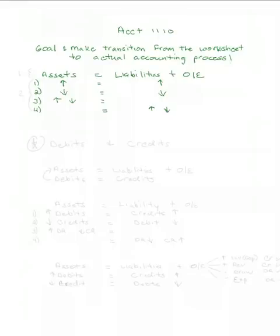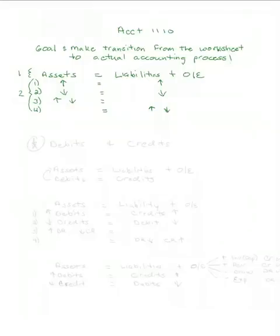So those are the two big takeaways from Chapter 1: number one, the balance sheet equation, and number two, the effects of transactions on the balance sheet equation. But the worksheet is unwieldy for an accounting document. How would it look if you had thousands of assets, thousands of liabilities, lots of revenues, more expenses than anything — it would just be too big. And if you had thousands of transactions, it would be too long and too hard to make accounting records from it. So in Chapter 2, our goal is to make the transition from that worksheet to the actual accounting process.